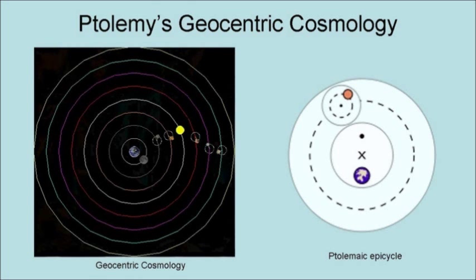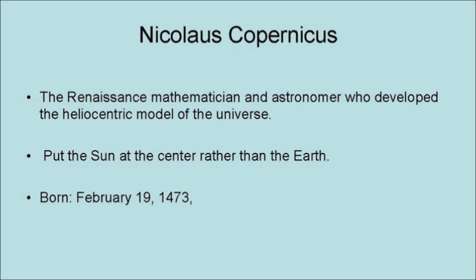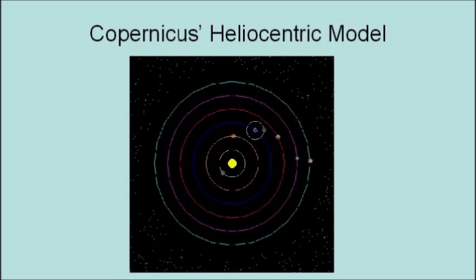Nicholas Copernicus was the Renaissance mathematician and astronomer who developed the heliocentric model of the universe. It put the Sun at the center rather than the Earth. Copernicus was born on February 19, 1473, and he died May 24, 1543. Here is a video animation of Copernicus's heliocentric cosmology.